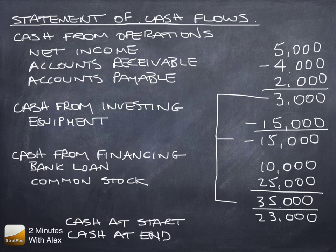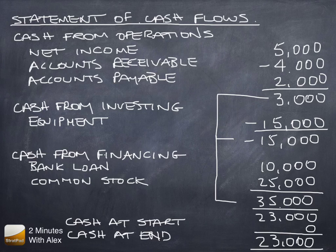Cash at the beginning of the period was zero. Therefore, cash at the end is also $23,000, with a double underline to show that we're at the end.